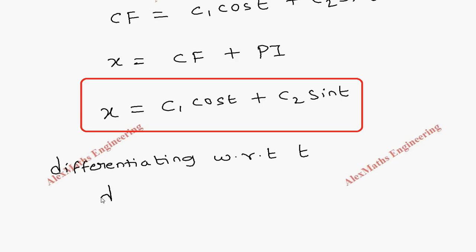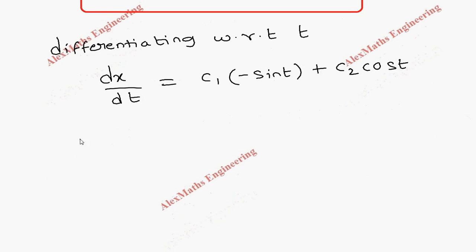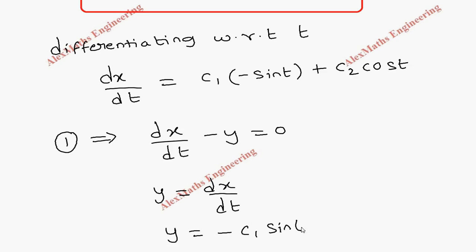So we get dx/dt - y = 0. So from the first equation, dx/dt - y = 0. So y is equal to dx/dt and therefore, y equal to -c₁sin(t) + c₂cos(t).